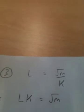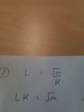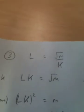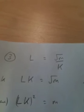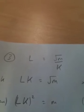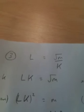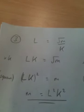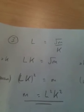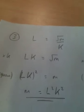Now, we want m, not root m, so we need to square both sides here. I square the left-hand side, I get lk all squared, and on the right-hand side, if I square a square root, that just basically disappears. As lk all squared equals m, m will just be lk times lk, which is l squared k squared.